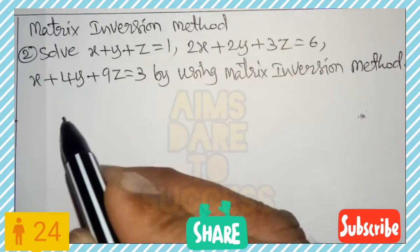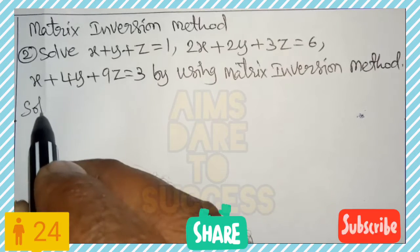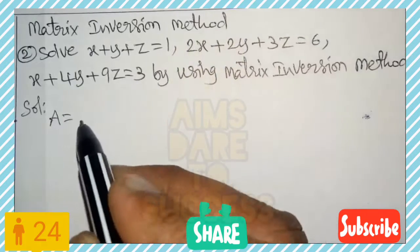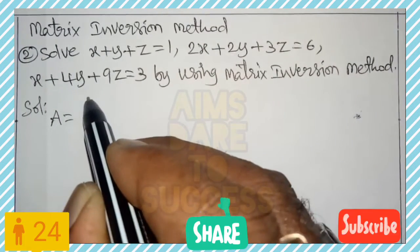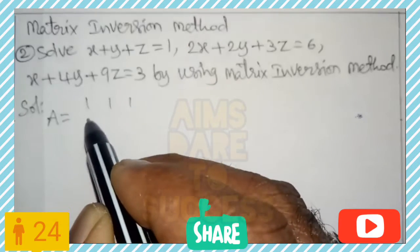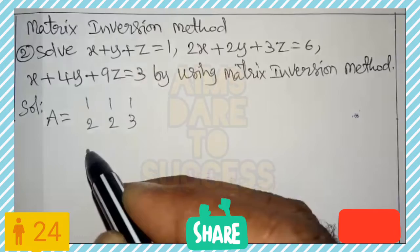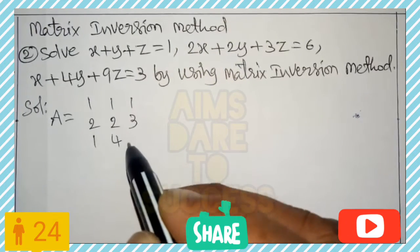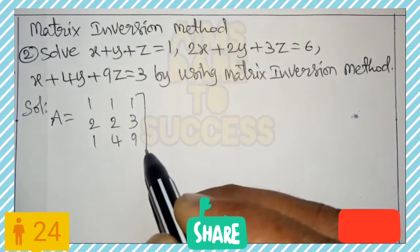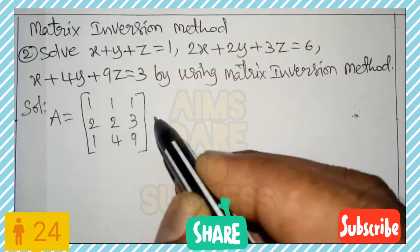We will solve: x + y + z = 1, 2x + 2y + 3z = 6, x + 4y + 9z = 3, using the matrix inversion method. First, we write matrix A with the x, y, z coefficients from the three equations: row 1 is 1 1 1, row 2 is 2 2 3.